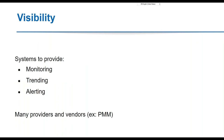Systems should also provide visibility. There are plenty of tools that provide visibility for third parties — applications can export metrics, and those metrics can be processed by monitoring systems that provide trending and alerting. An example of this is PMM.